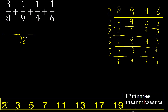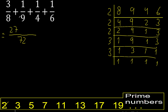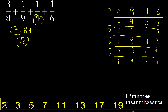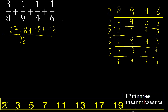72 divided by 8 is 9, 9 multiplied by 3 is 27. Plus, divided by 9 is 8, 8 multiplied by 1 is 8. Plus, divided by 4 is 18, multiply by 1 is 18. Plus, divided by 6 is 12, multiply by 1 is 12. Plus, divided by 6 is 12, multiply by 1 is 12.